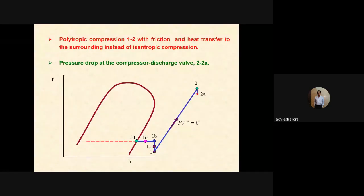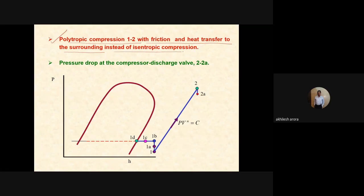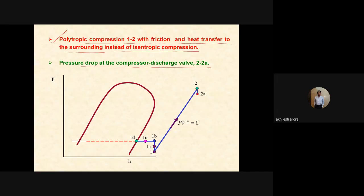Next is polytropic compression from 1 to 2 with friction and heat transfer to the surroundings, instead of isentropic compression. The second deviation in this group is the pressure drop at the compressor discharge valve from 2 to 2A.